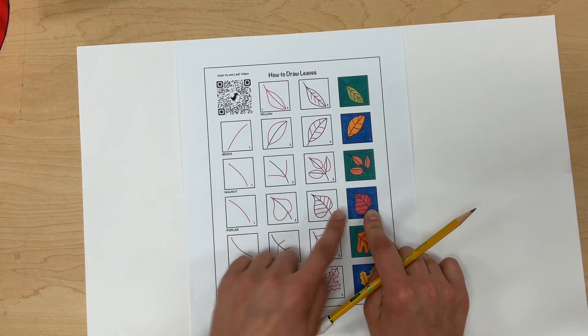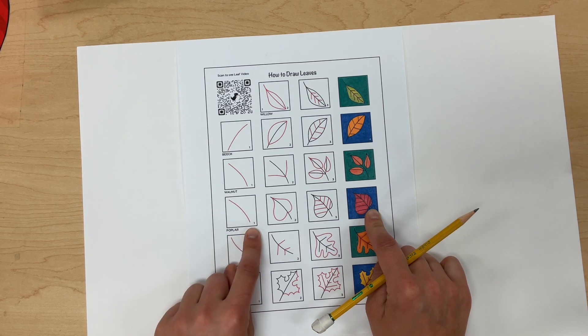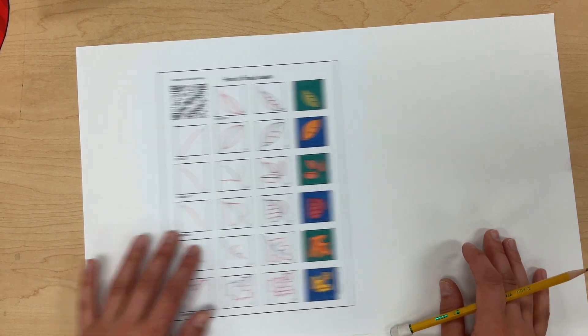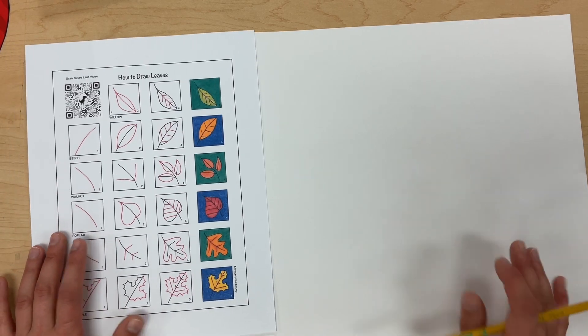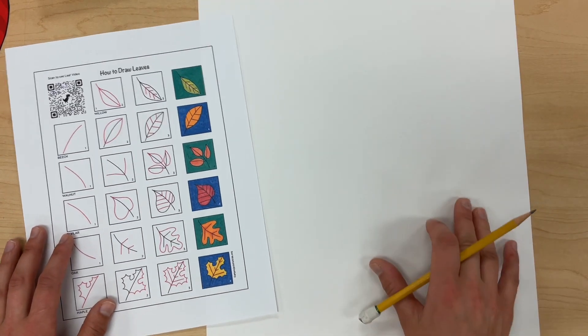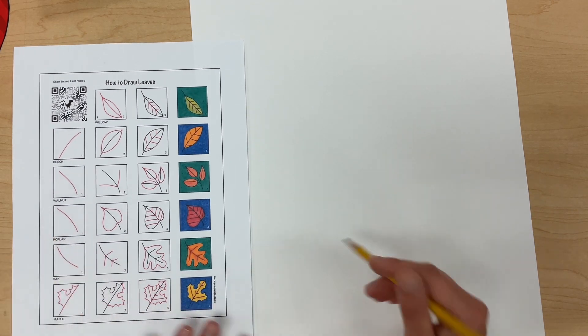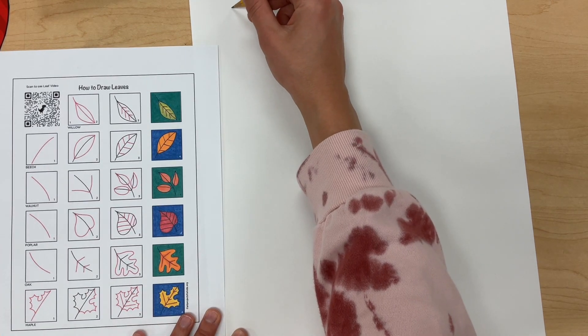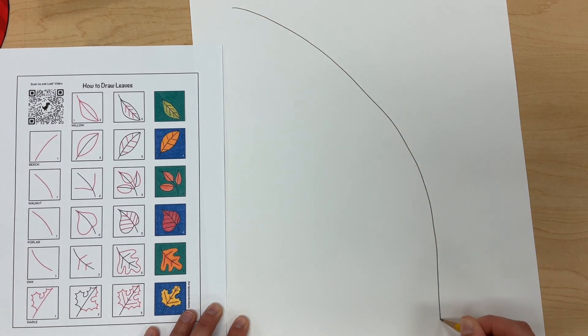I'm going to look at the first step that says number one. This is a poplar leaf and it says it right under where the drawing starts. So I'm going to draw my leaf just like this paper says, and the first line I have to draw—I'm actually going to turn my paper so it's a little easier. I'm going to draw a line that curves that goes pretty much across my whole paper, big curved line.